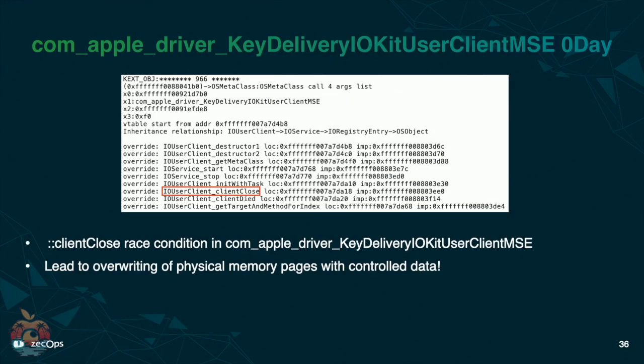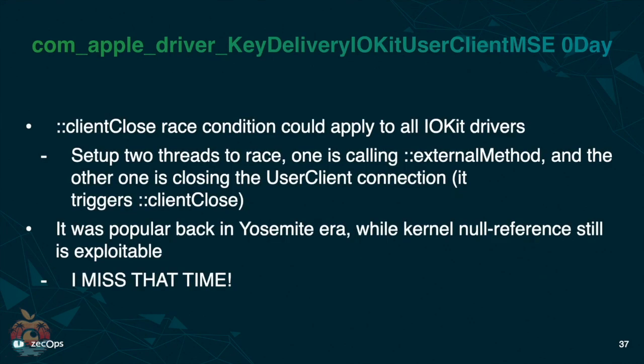The last version I checked was vulnerable on iOS 14.0 — maybe it's still zero-day right now. It exists in a driver whose name is Key Delivery MSE. As the consequence of this vulnerability, you get to override a physical memory page with controlled data. Doesn't that sound amazing? I would love to learn if anyone knows how to exploit this. It's a race condition — you set up two threads to run: one is calling an external method, another is closing the client connection. Just keep trying until something magical happens.